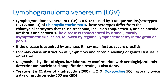Another common infection is lymphogranuloma venereum (LGV), produced by Chlamydia trachomatis. It is characterized by a small asymptomatic skin lesion followed by regional lymphadenopathy in the groin or pelvis. It can also present as proctitis after anal sex. LGV may cause obstruction in lymphatic flow and chronic genital edema. Treatment of choice is doxycycline 100 mg twice daily or erythromycin 500 mg QID.